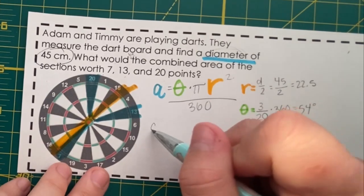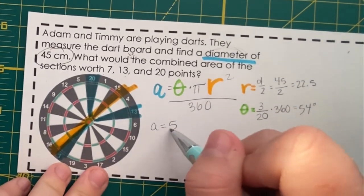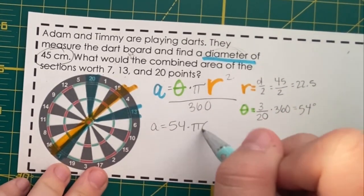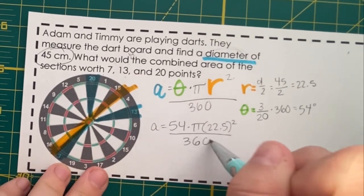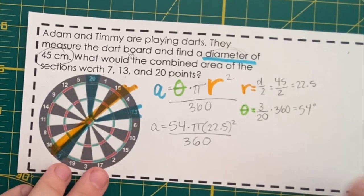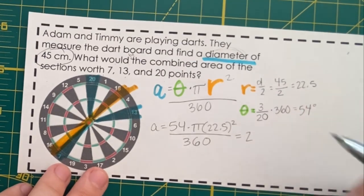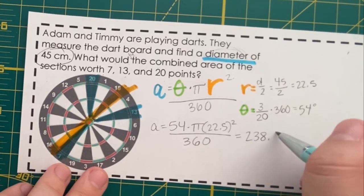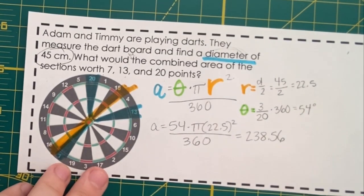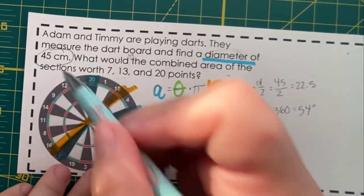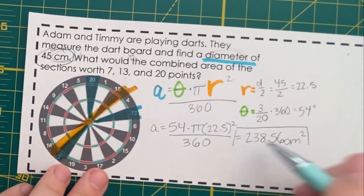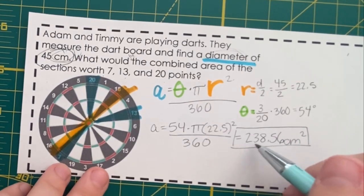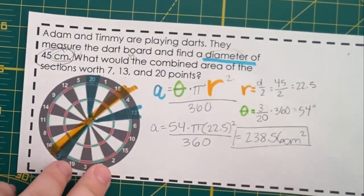So, now let's substitute that in. Again, we can use Desmos for this. And this is area, so it's not just going to be centimeters. It'll be centimeters squared. So, the area of those three sections is 238.56 centimeters squared.